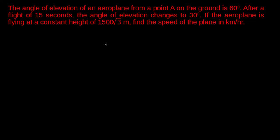The angle of elevation of an aeroplane from a point A on the ground is 60 degrees. After the flight of 15 seconds, the angle of elevation changes to 30 degrees. If the aeroplane is flying at a constant height of 1500 root 3 meters, find the speed of the plane in km per hour.